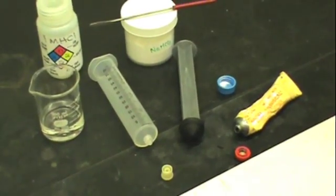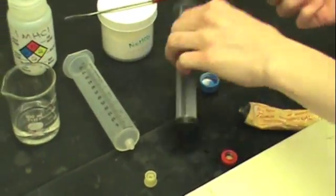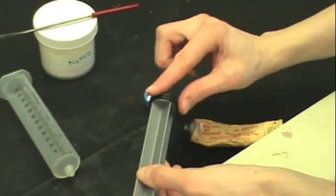Obtain a 60 milliliter syringe and plunger. Then put some grease on your finger and grease the plunger very well so that it slides easily.